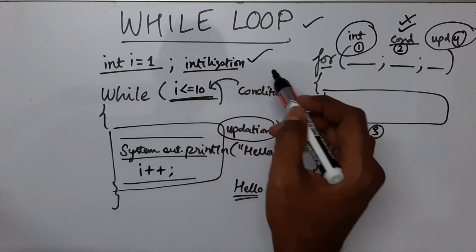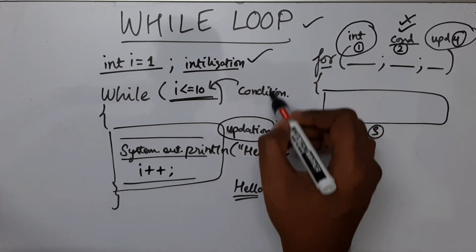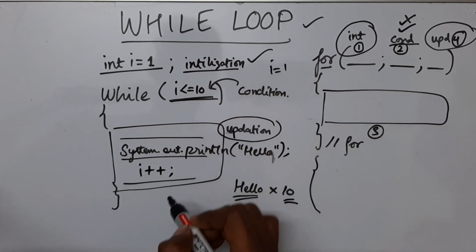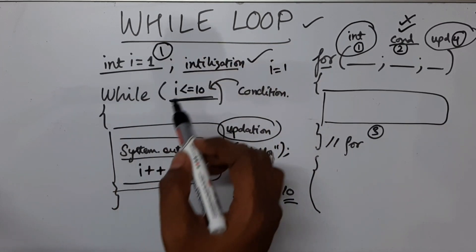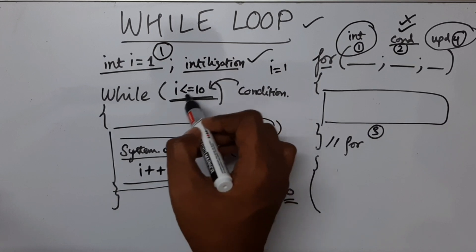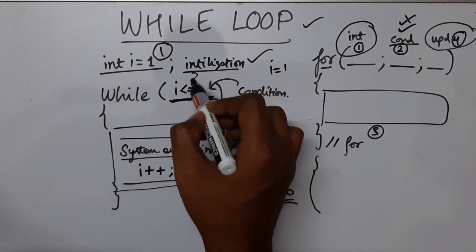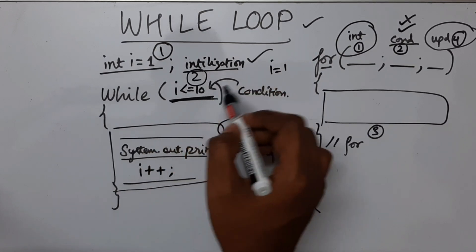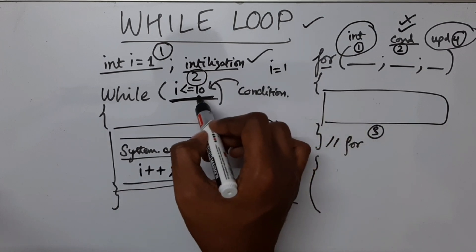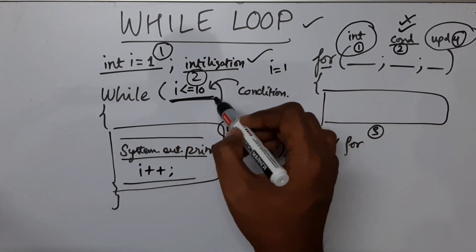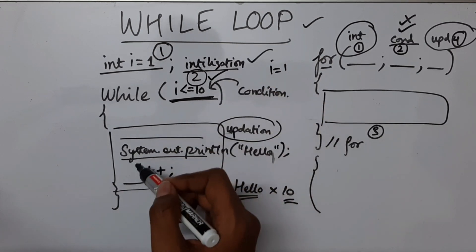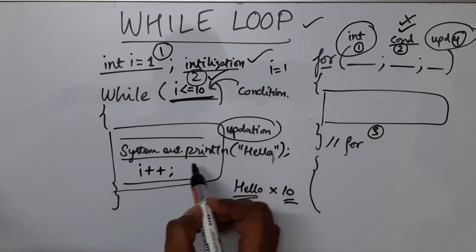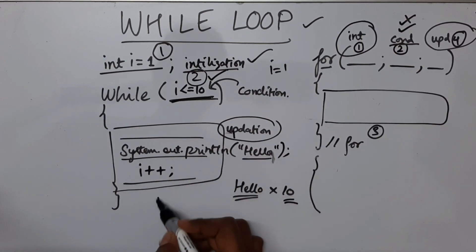First the initialization will happen. So now we will have a variable called i equal to 1. Now this is the thing which executes first. Secondly what executes, this condition is checked. So this is the second one. So this condition is checked and i, since it is 1, it is less than equal to 10. So the condition is passed, hence it will go inside the body of the while loop. What is inside the body of the while loop? It is going to print hello.